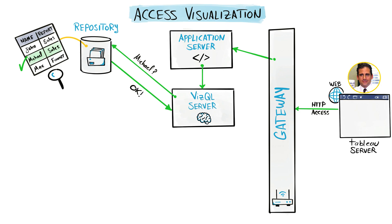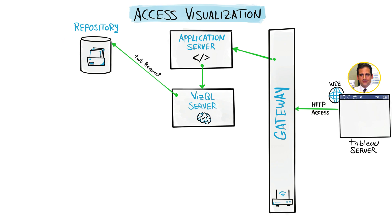Now VizQL says: we need data, so first we need the metadata of the dashboard. As you know, after we publish the workbook, the metadata is stored inside the repository. So VizQL requests from the repository the XML file of the dashboard. The repository then sends back the XML to the VizQL server, and the server starts building the dashboard.